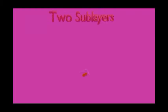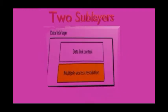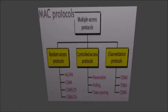The two sub-layers of data link layer are data link control and multiple access resolution. Multiple access protocols are of three types. Here we are going to discuss random access protocols.